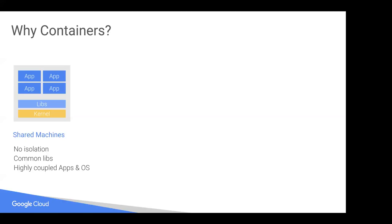In that scenario, there is no isolation between the apps, so they can potentially cause difficulty for each other. There is a common set of libraries on the machine, and there's a tight coupling between the apps and the operating system. This is true not just for deployment, but for development as well — if you're developing multiple apps like front-end and back-end, they're all using the same libraries, which can potentially be a problem.